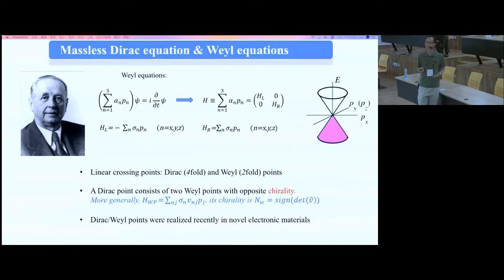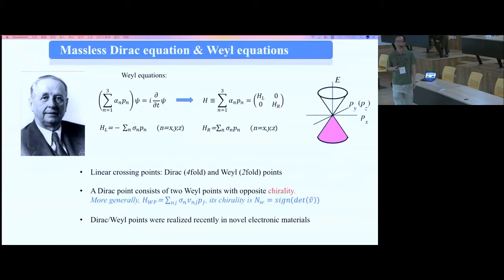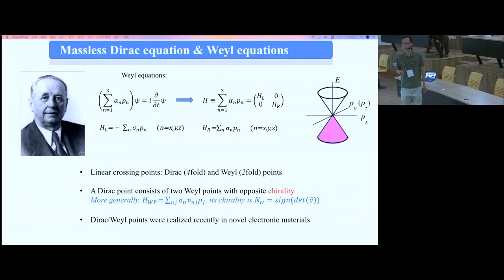I want to emphasize that whenever I mention Dirac points, I mean a four-fold linear dispersion crossing. Weyl points are just two-fold crossings. A Dirac point consists of two Weyl points with opposite chirality. In general it is a linear crossing with certain topological properties, and sometimes there is mixing of different terminology in the literature.